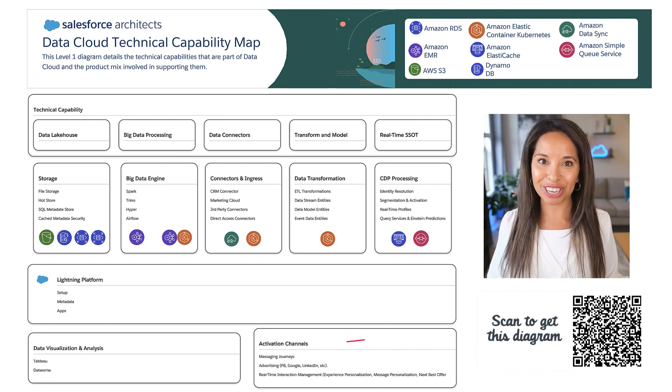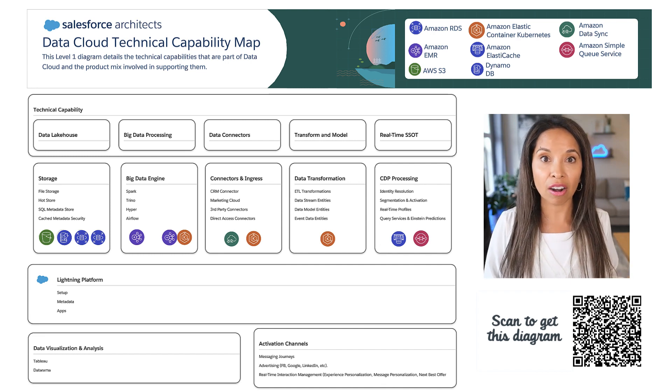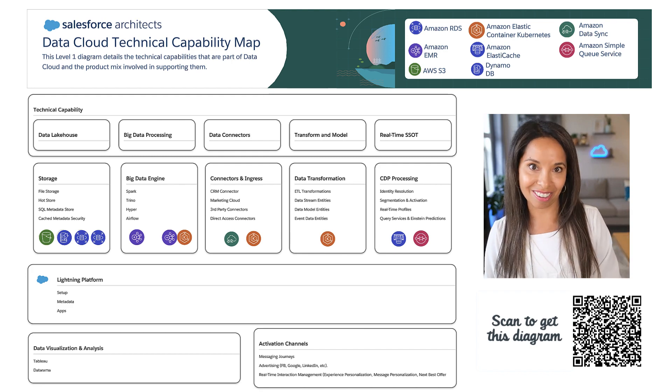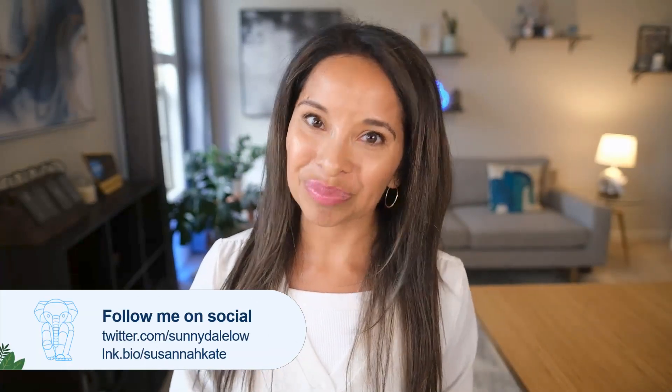And finally, we have our activation channels, which are really the ultimate purpose of all of this technology. We want to understand our customer, but we do that so that we can connect with them and create those one-to-one experiences at scale. This is really what makes data cloud different from other data lakes, data lake houses, or CDP platforms. If you want to see more content like this, let me know in the comments down below. With that, I hope you have a wonderful day and I hope to see you back here very soon.